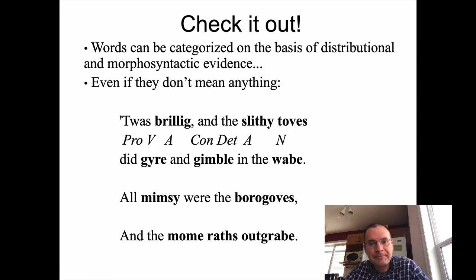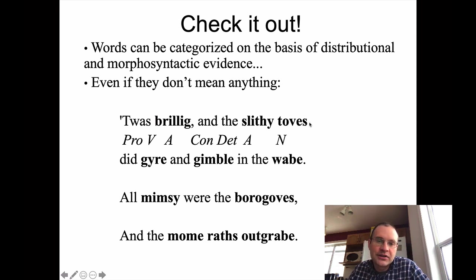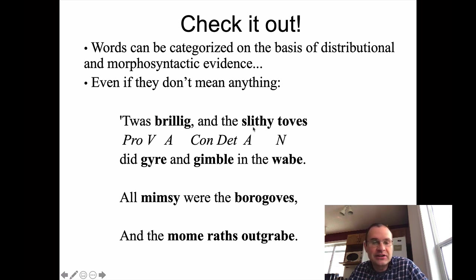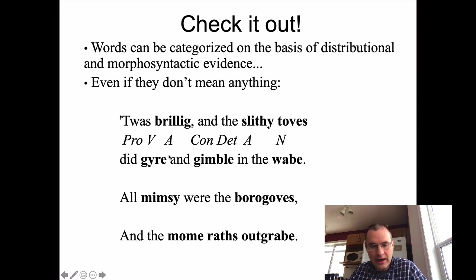What lexical category is 'toves'? It is a noun. 'It' is a pronoun; 'was' is a verb; 'brillig' I'm going to call an adjective; 'and' is a conjunction; 'the' is a determiner. 'Toves' is a noun — it's in the context of a determiner and adjective, like 'the blue roses,' and it takes a plural inflectional affix: there is more than one tove. 'Slivey' is an adjective because that's the only thing that fits in this syntactic frame. 'Gyre' is a verb — 'did gyre,' the only thing fitting after an auxiliary is a verb. 'Gimble' is also a verb, conjoined by 'and.'